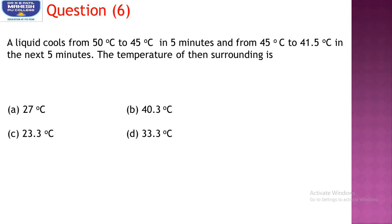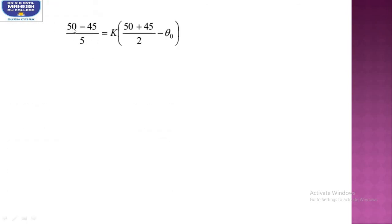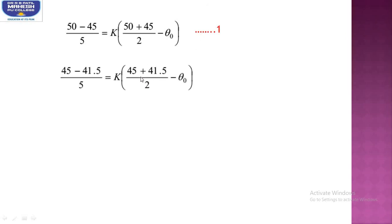Question number 6: A liquid cools from 50°C to 45°C in 5 minutes, and from 45°C to 41.5°C in the next 5 minutes. The temperature of the surrounding is to be found. Using Newton's law of cooling: (50 − 45)/5 = k·[(50 + 45)/2 − θ₀] as equation 1, and (45 − 41.5)/5 = k·[(45 + 41.5)/2 − θ₀] as equation 2.